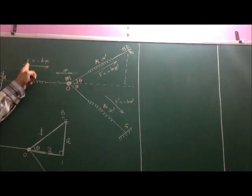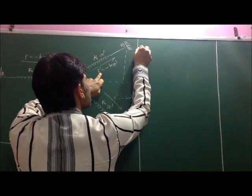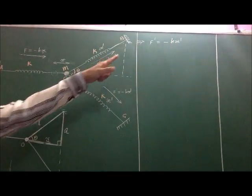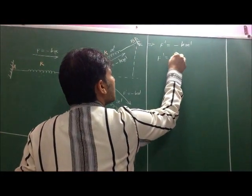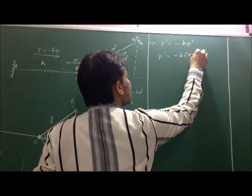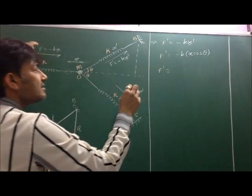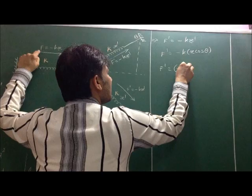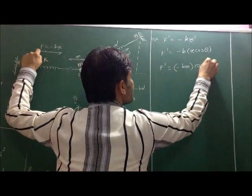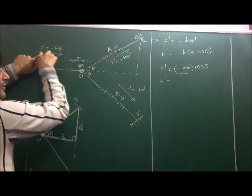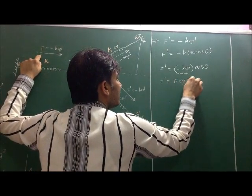Now our aim is to get the relation between f-dash and f. We have f-dash equals minus k·x-dash. Since x-dash equals x·cos theta, substituting gives f-dash equals minus k·x·cos theta. Since minus kx is nothing but f, we get f-dash equals f·cos theta. This is another important relation.